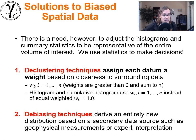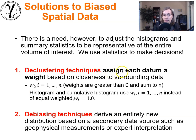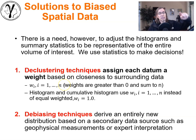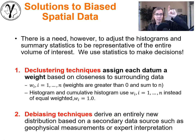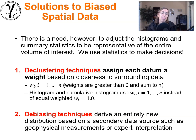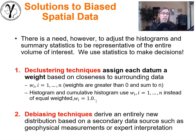We have two methodologies to accomplish this. The first is declustering techniques. We want to adjust and get corrected histograms and summary statistics. Declustering does it by assigning a weight to each data value. So you have a table with a column of values at every location and a column of weights. That weight tells you about how sparsely sampled each one of the samples is. We can then use those weights in any of our statistical calculations.